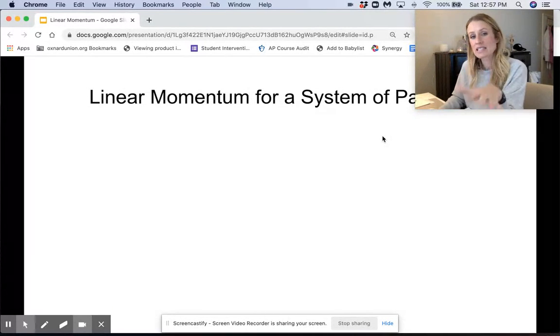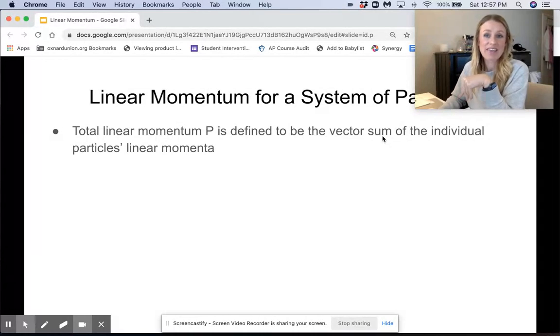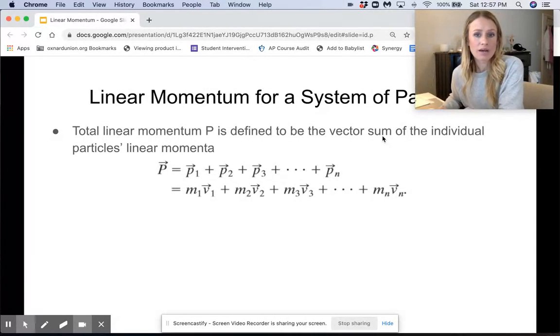So when we have a system of particles, that's what that says there, linear momentum for a system of particles. We can get the total linear momentum, which is a capital P of the system, and that's defined to be a vector sum of the individual particle's linear momenta. So basically all we do is we add up the momentum of every single particle in that system.